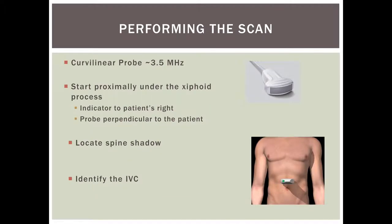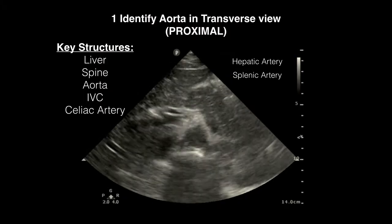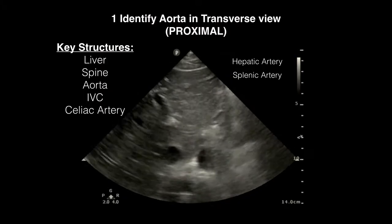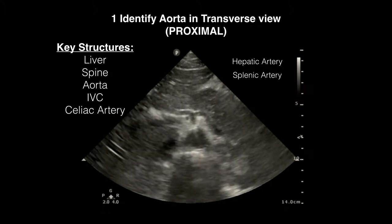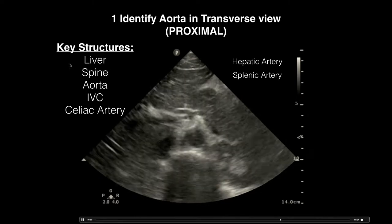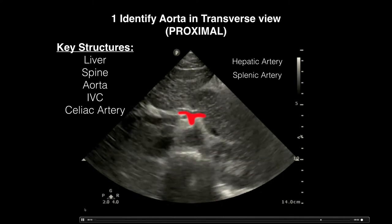When performing the scan, use a curvilinear probe or a phased array probe if a curvilinear is unavailable. Start right at the sub-xiphoid area with the indicator towards the patient's right side. The first view is the proximal aorta in transverse. The key structures you'll see are the liver, spine, aorta, IVC, and celiac artery. The liver serves as an acoustic window so you can see the descending aorta, and the abdominal aorta will be located between the liver and the spine.